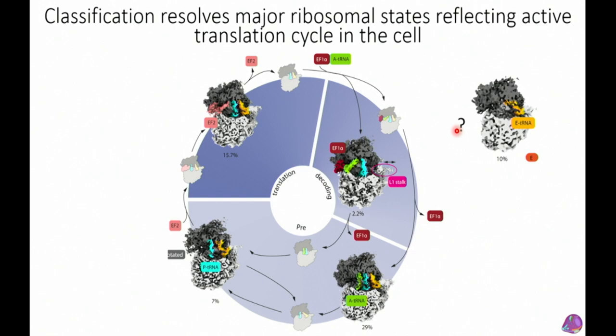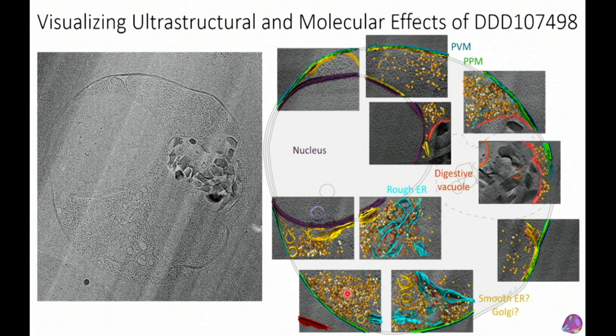Mapping ribosome states back into the cellular context — classified by ligand state and membrane binding — you can see membrane-bound ribosomes in bright red localized next to the ER, monosomes in orange, and polysomes in wheat color clustered around the rough ER, with fewer near the nucleus and digestive vacuole. We're now comparing this with control cells to see changes in polysome distribution, translational activity, and membrane-bound ribosome localization.